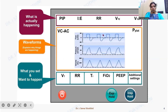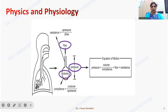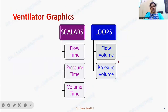Understanding ventilator waveforms and graphics explains why things are happening the way they have. Respiratory physics and physiology revolve around two main concepts: resistance and compliance. Resistance is determined by the flow of air through the airways, and compliance is determined by the distensibility of the lung. In ventilator scalars and graphics, we monitor three parameters mainly: flow, volume, and pressure — and use these to assess resistance and compliance using the equation of motion.